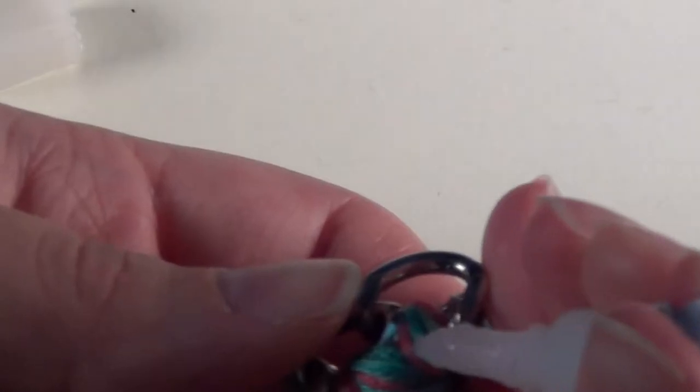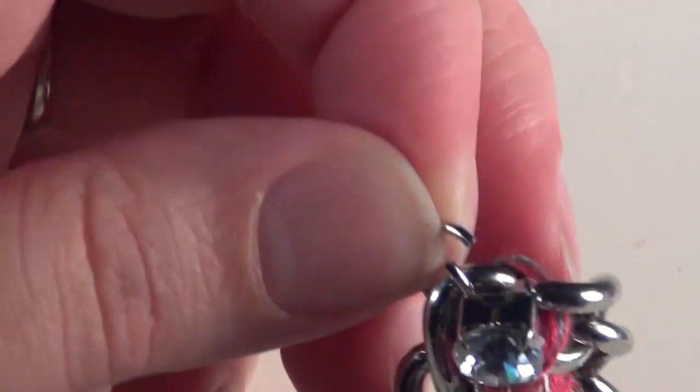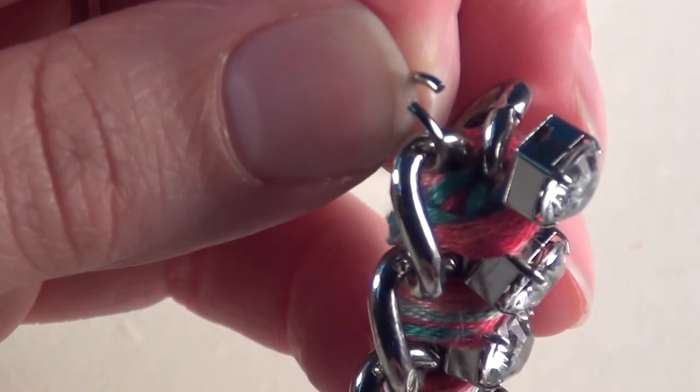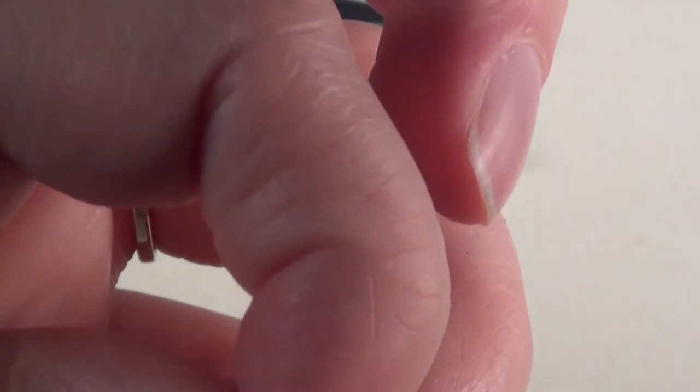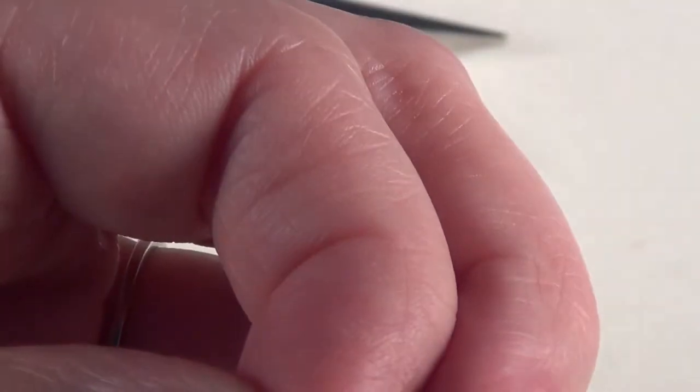Just like that. Once you're done with that, you're going to open up the jump ring on the end of your bracelet and slip one side of the chain out, then close that jump ring up again.